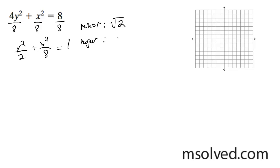Major, which will be my vertices, is going to be square root of 8, which becomes square root of 4 times 2, which is equal to 2 root 2.